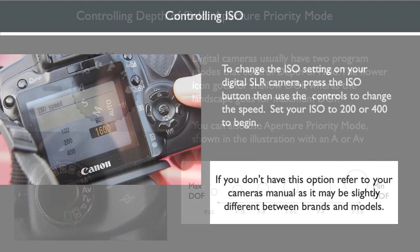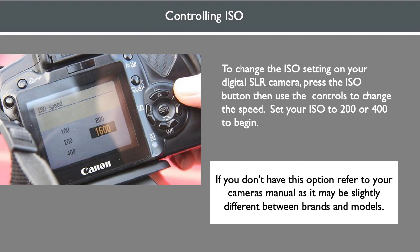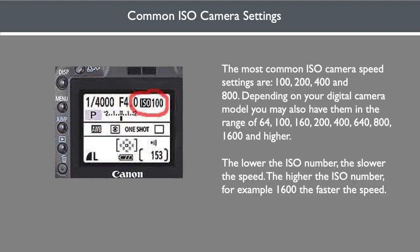To change the ISO setting on your DSLR, follow your camera manual's instructions. This is usually accessible on the back of the camera or in your camera's menu. The most common ISO camera settings are from 100 to 800. Depending on your digital camera model, you may also have them in the range of 64 or all the way up to 1600 and higher. Remember, the lower the ISO number, the slower the speed. The higher the ISO number — for example, 1600 — the faster the speed.